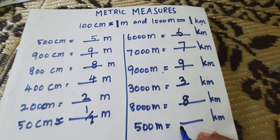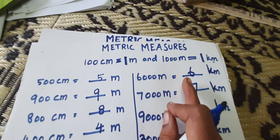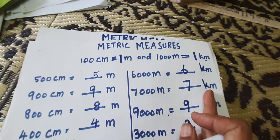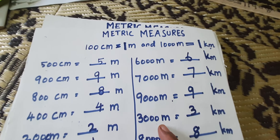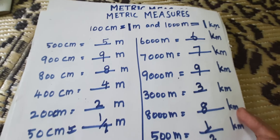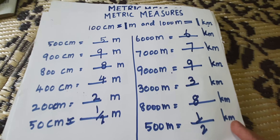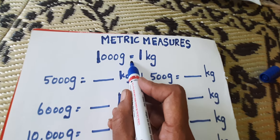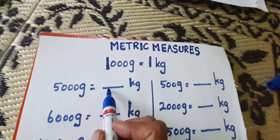500 meters equals 1.5 kilometers. 6,000 meters equals 6 kilometers, 7,000 meters equals 7 kilometers, 9,000 meters equals 9 kilometers, 3,000 meters equals 3 kilometers, 8,000 meters equals 8 kilometers. 500 meters equals 5 kilometers. 7,000 meters equals 6 kilometers.